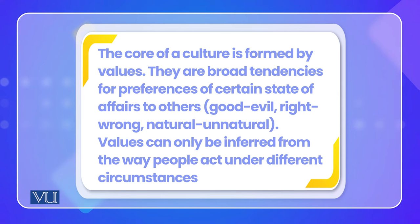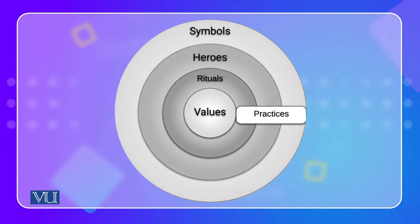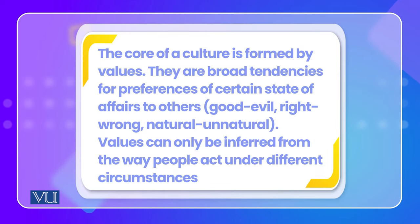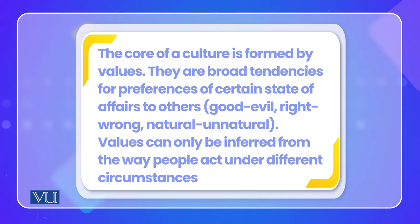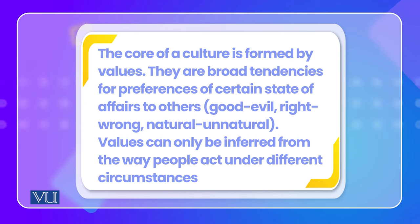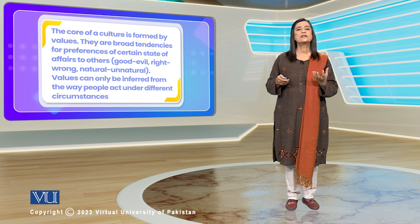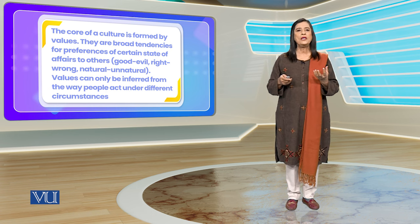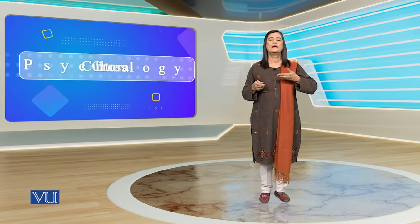Culture's core is values. As we go down from symbols and rituals to values — values are broad tendencies for a preference for certain states of affairs over others. Good and evil, right and wrong, natural and unnatural — this is our tendency. We have a tendency to call these values, and when people behave differently, we sense from our values whether it seems honest or dishonest.